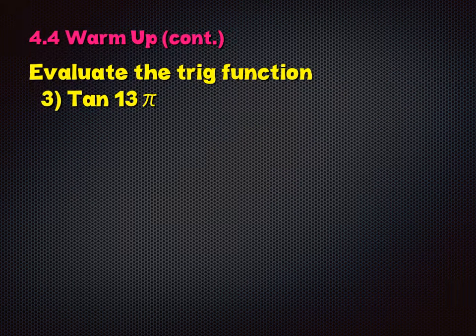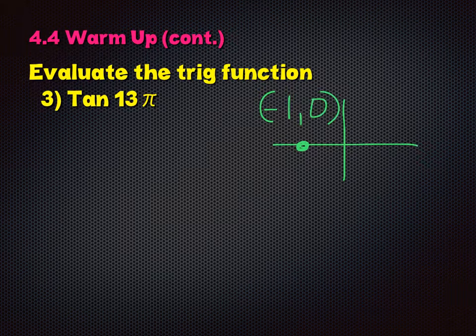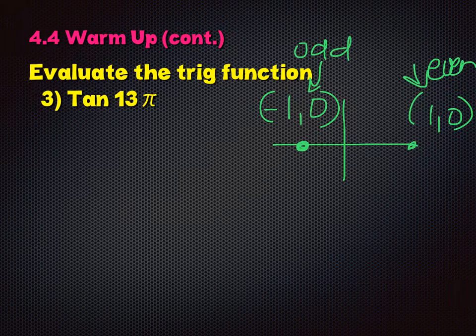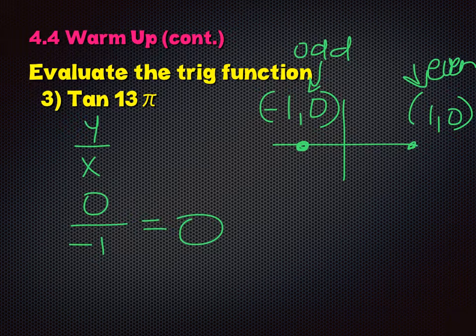Number 3 says evaluate the trig function — we're looking for the tangent of 13π. Don't go around your circle six and a half times. Realize that 13 is a whole number, and whole numbers are either even or odd — that tells you which side of the circle you're on. If I give you the tangent of 113π, you should get it just as fast without converting to degrees or finding coterminals. If it's an odd whole number, we said it's on the left, which is the point (−1, 0).